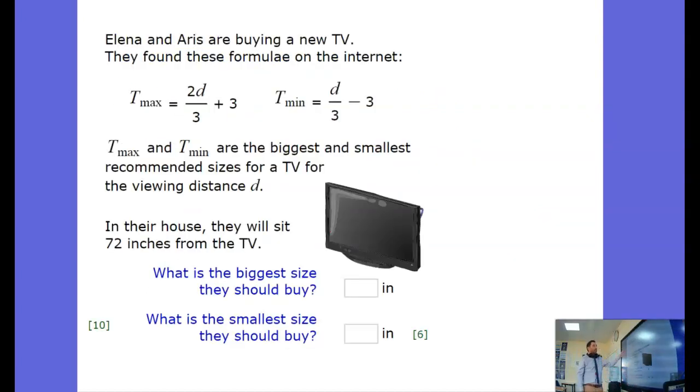Here we've got a question a little bit more wordy with a formula rather than just an expression. So we've got the maximum size of a TV here is 2 times d divided by 3 then add 3. Pretty complicated formula.